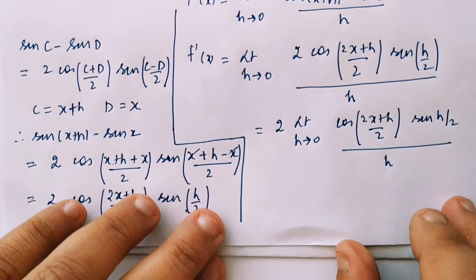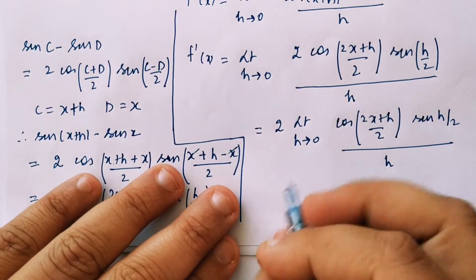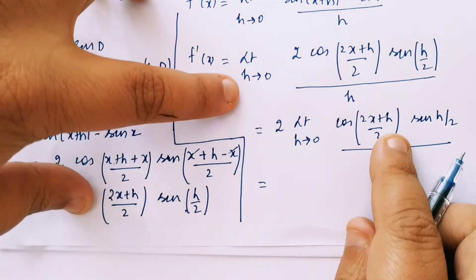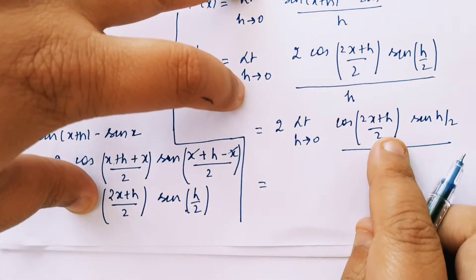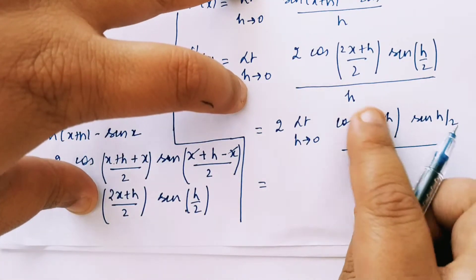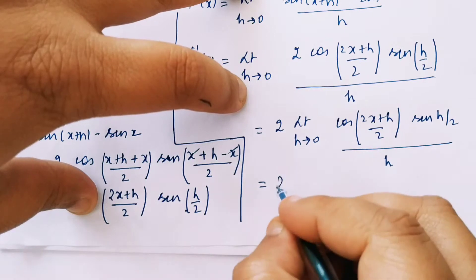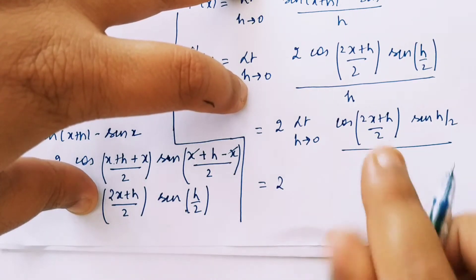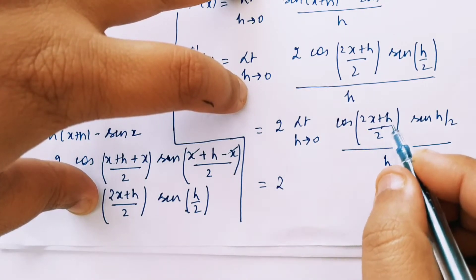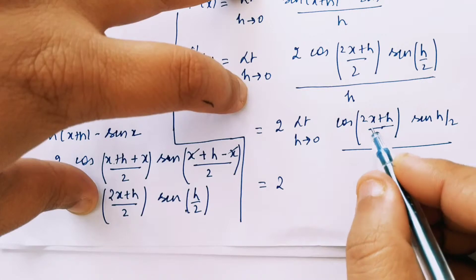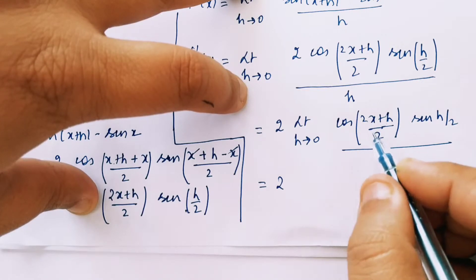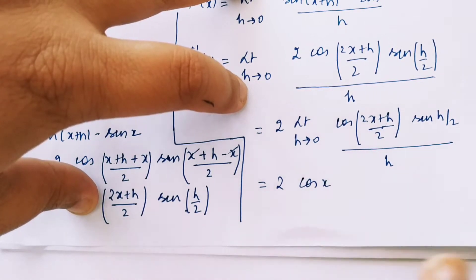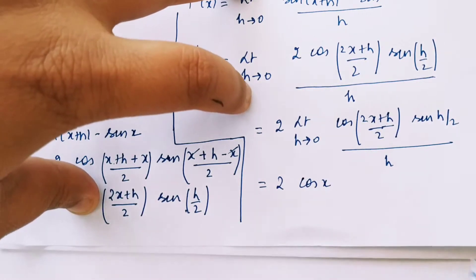Now, if we put h = 0 in the cosine part, applying the limit h tends to 0, we get cos((2x+0)/2) = cos(2x/2) = cos x. So the cosine part gives us simply cos x.